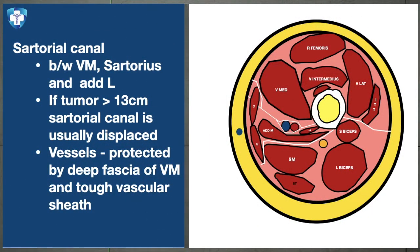Looking at a cross-section at this level, we can see the sartorial canal formed by the vastus medialis, sartorius, and adductor longus, containing the vessels and saphenous nerve. If the tumor size is greater than 13 cm, the sartorial canal is usually displaced. Therefore, preoperative MRI is crucial before surgery planning — it shows the level of vessel displacement or encasement and whether we can protect the vessels.